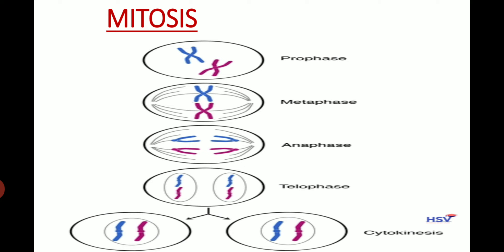In telophase, the cell becomes narrow at the center to facilitate division. The thread-like structures disappear and the nuclear membrane reappears. At the end of telophase, cytokinesis occurs — the cell divides. The chromosomes disappear into the nucleus, and the daughter cells grow and in turn reproduce by mitosis.